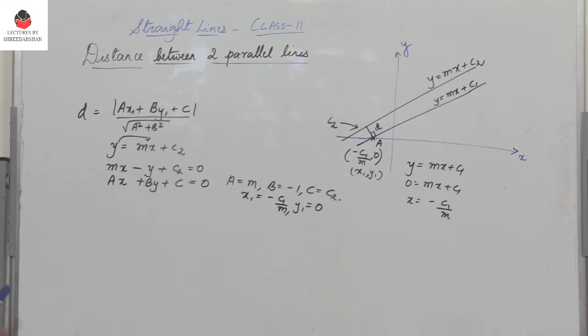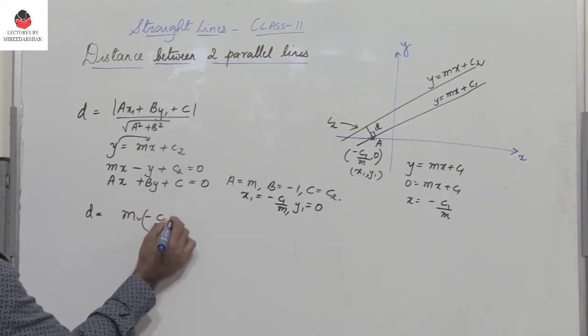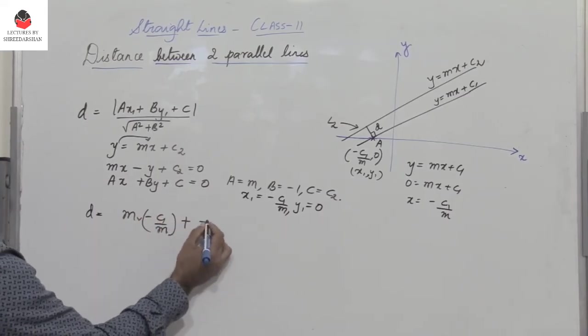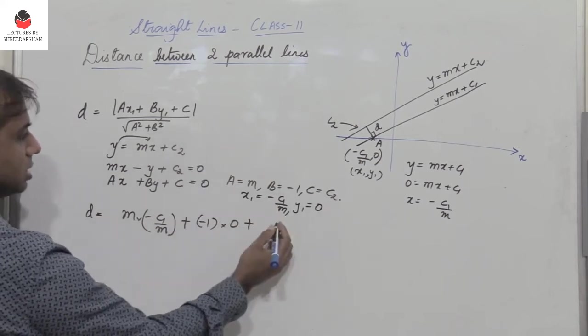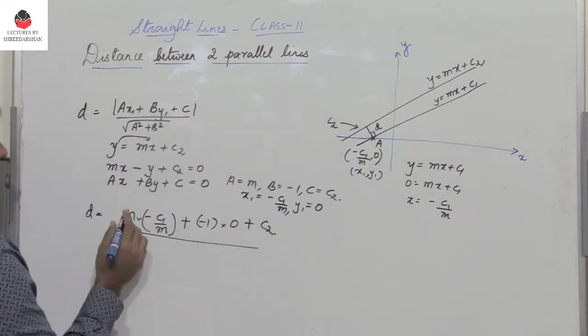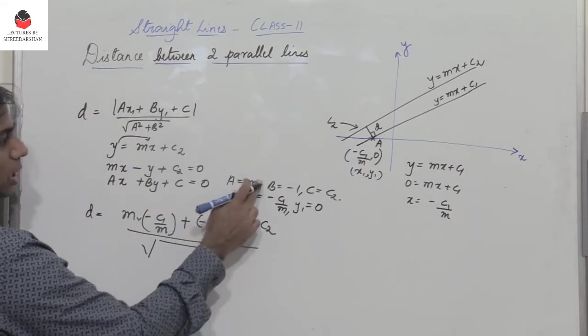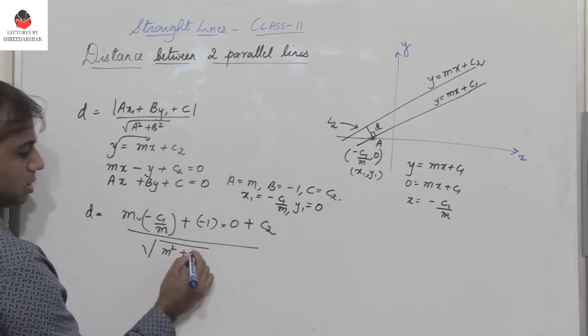So you have d equals ax1, a is m into minus c1 by m, plus b is minus 1 into y1 is 0, plus c is c2. So c is c2 divided by root of a square plus b square, that is a square is m square plus 1.